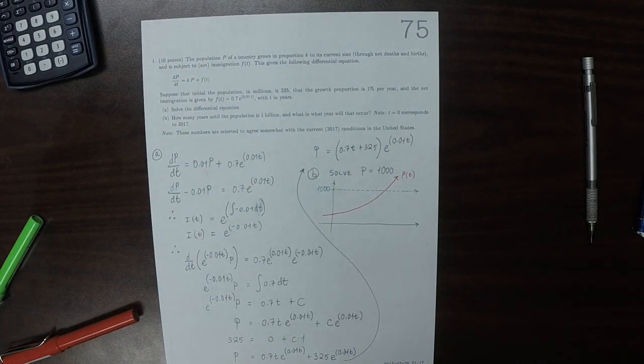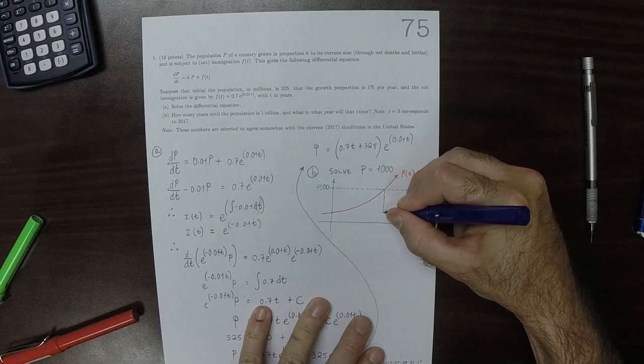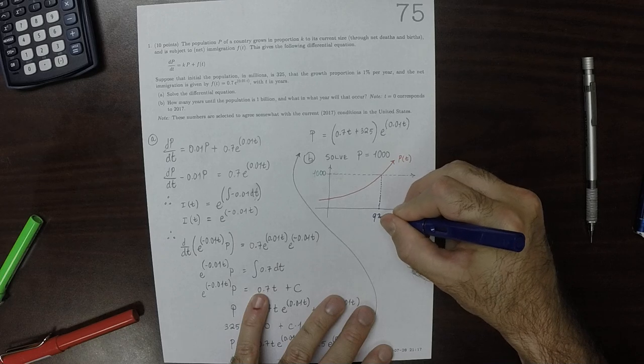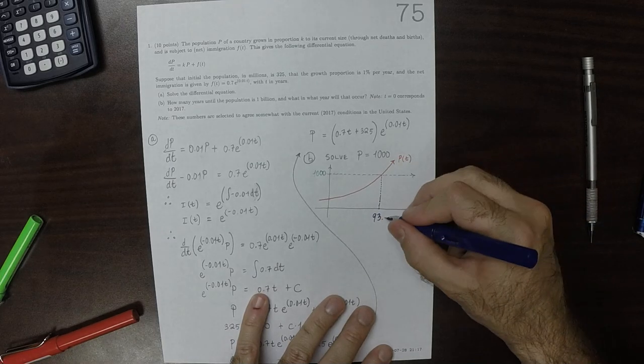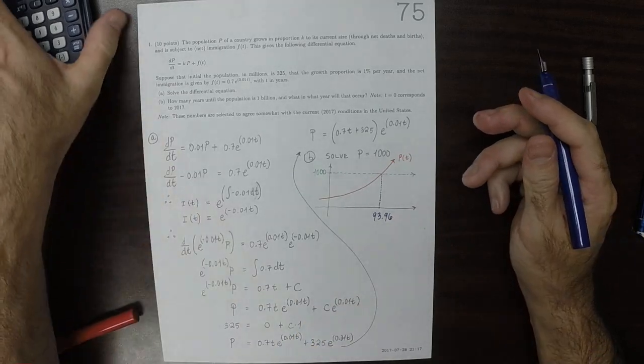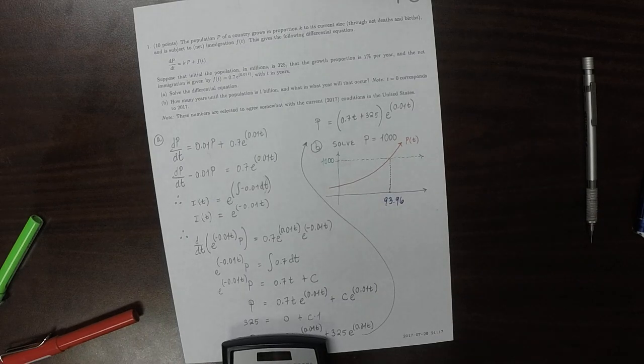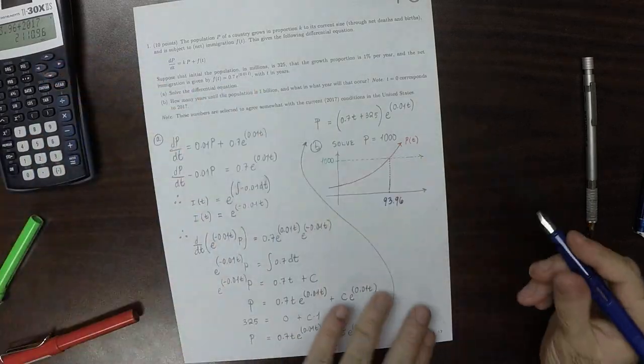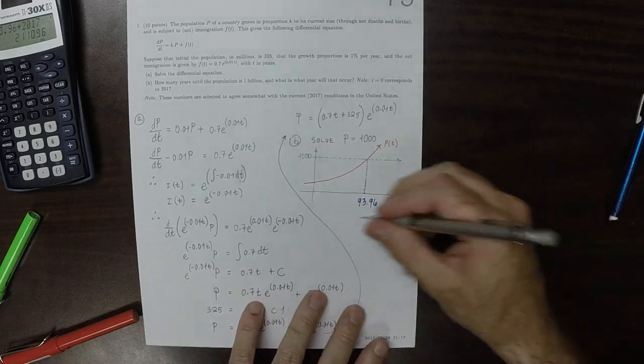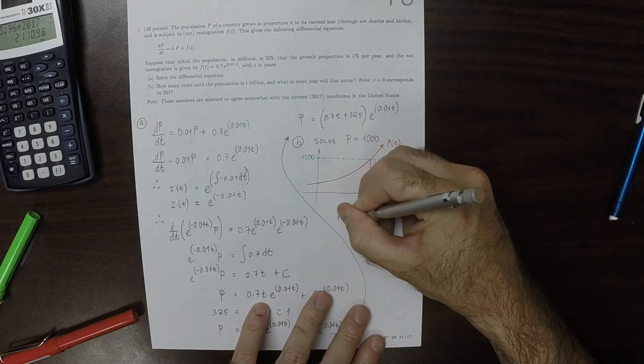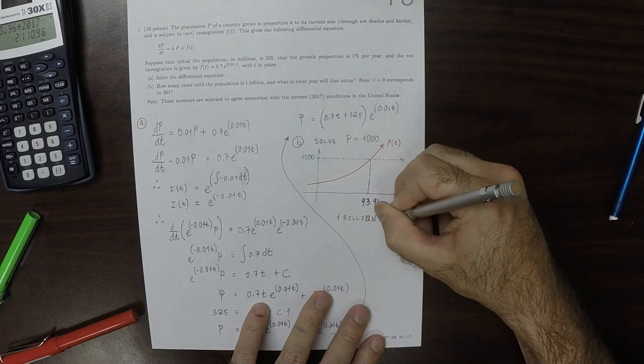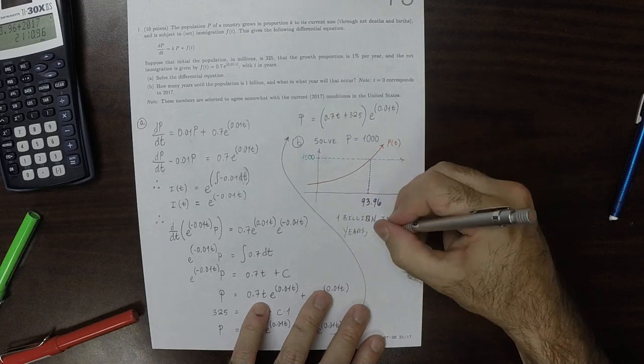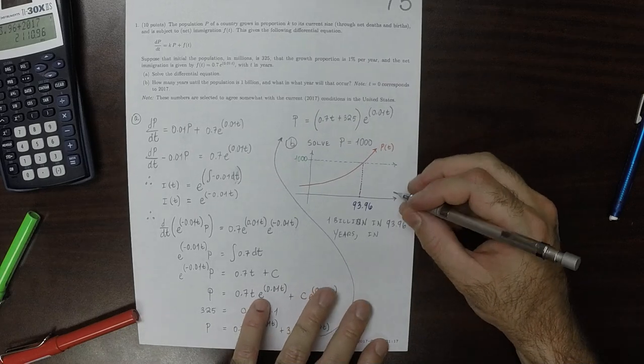And then if we had an accurate plot we could come down here and check. And my computer algebra system says that this occurs at 93.96 years. So then adding 2017 to that, we get... so the conclusion is that we'll have a population of one billion in 93.96 years, that is to say in 2110.96.